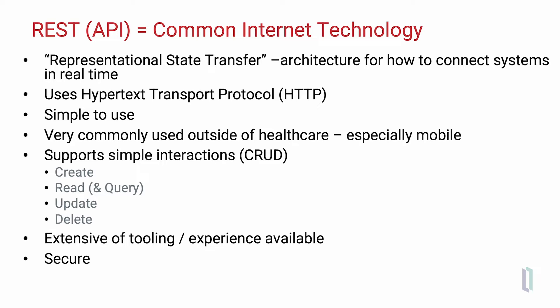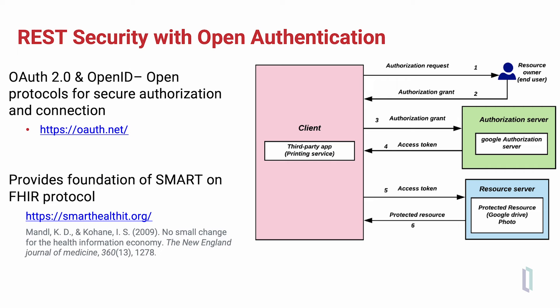There is also security that is commonly employed in other internet applications. That security most commonly is enabled by open authentication. The OAuth 2 and OpenID open source standards provide protocols that allow secure access to FHIR resources on different servers and enable the widely used SMART on FHIR protocol, which is part of the U.S. regulations to enable applications to access FHIR data in EHRs or as stand-alone applications.